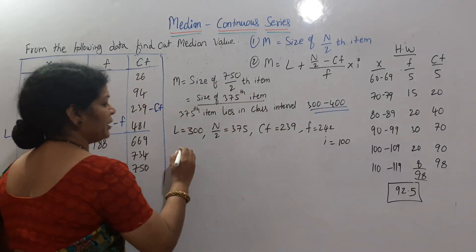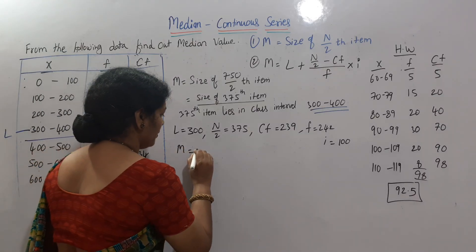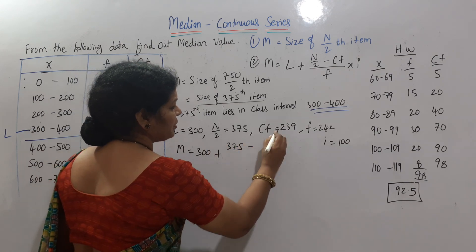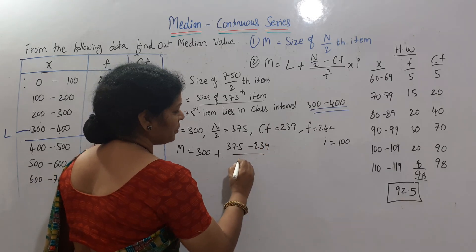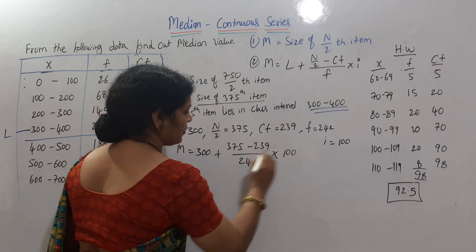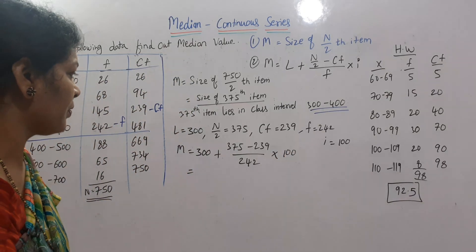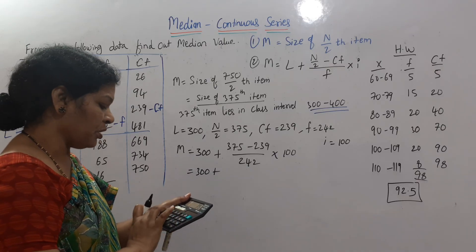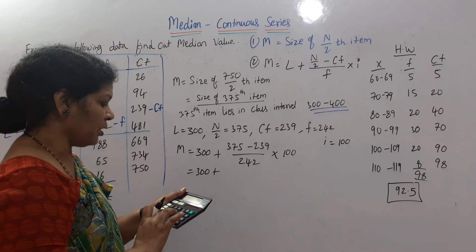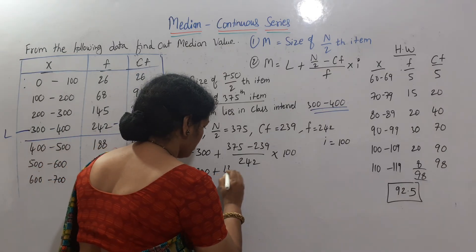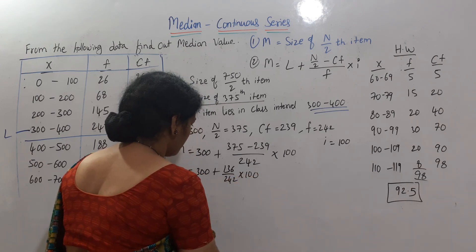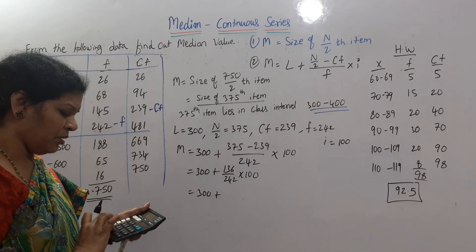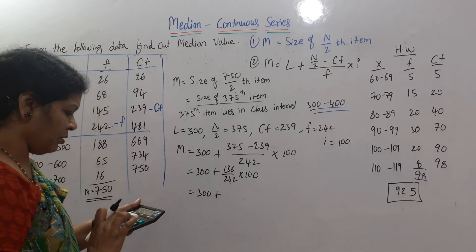Now the formula: M = L + ((N/2 − CF) / f) × I. L means 300. N/2 means 375. Minus CF means 239. Divided by frequency 242. Into I means 100. Calculation: 300 + (375 − 239) = 136. Then 136 divided by 242 into 100 gives 56.2. So the median is approximately 356.2.